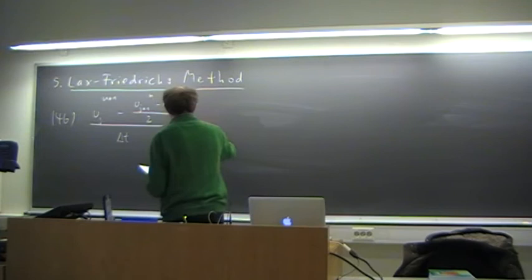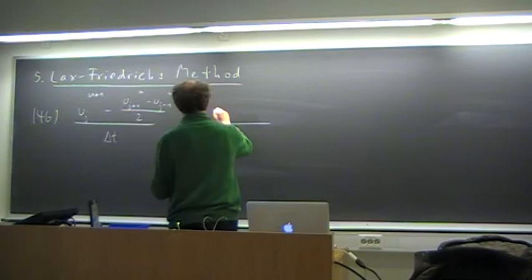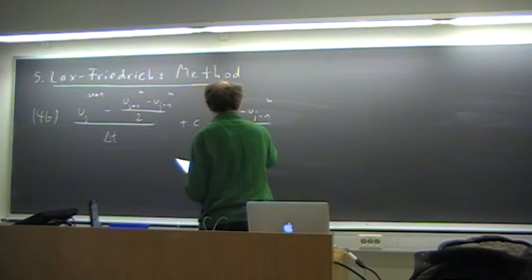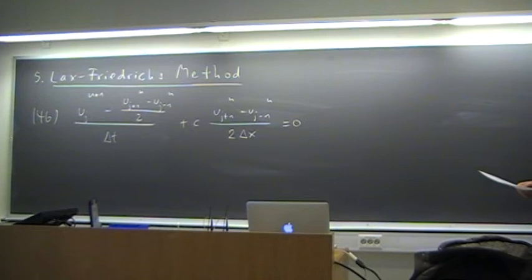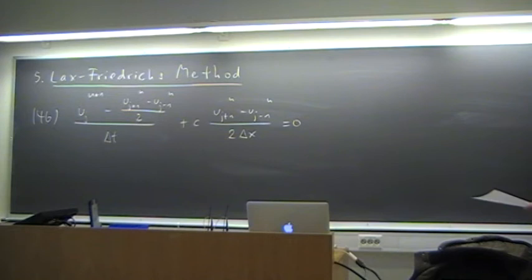The spatial discretization is done by a centered difference: (u_{j+1}^n minus u_{j-1}^n) divided by 2Δx equals zero. We discussed how to treat the boundary conditions. One is given at the inflow boundary, and at the right boundary we can use the explicit update.